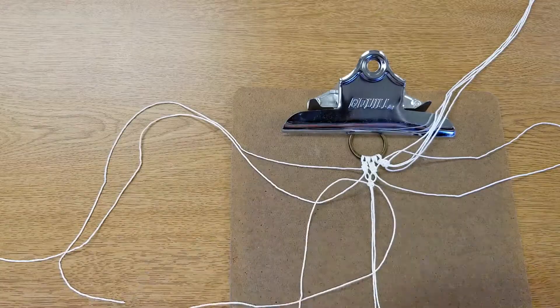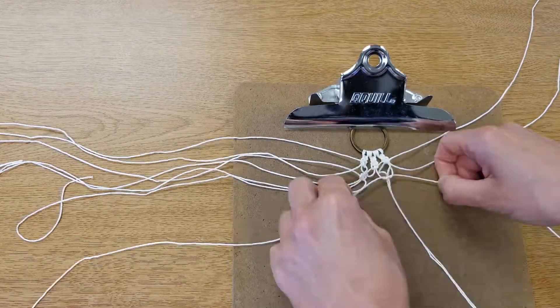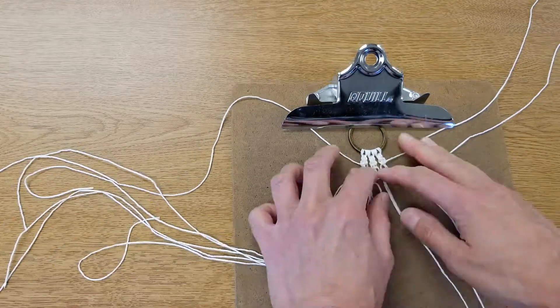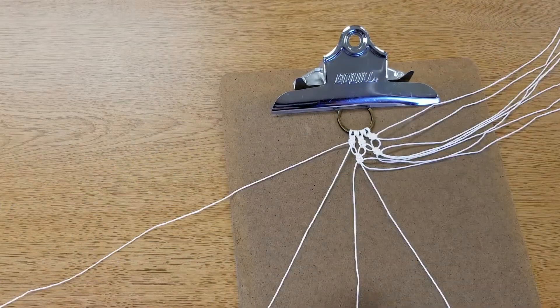You know the drill! Time for that second set of square knots! And then we're going to do the exact same thing on the other side. And now we're at row three!